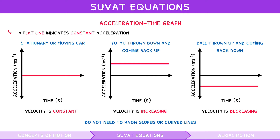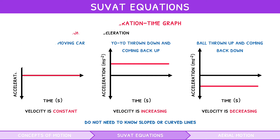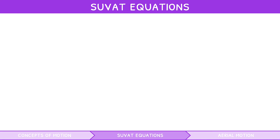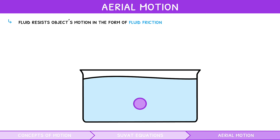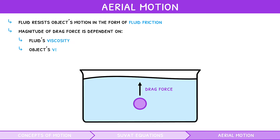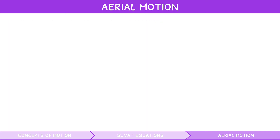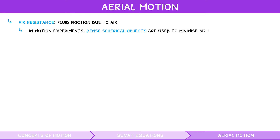The IB expects you to apply this knowledge in creative scenarios, including three common applications involving aerial motion. When an object moves through a fluid such as water or air, the fluid resists the object's motion in the form of fluid friction. The counterforce the object experiences due to this is termed the drag force. The magnitude of the drag force is dependent on the fluid's viscosity and the object's velocity, size, and shape. Air resistance is the fluid friction due to air; in motion experiments, dense spherical objects are used to minimise air resistance.